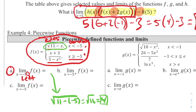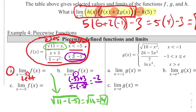Part B: the limit as x approaches −5 from the right. We use the second equation (x ≥ −5). Plugging in −5: (−5 + 3)/(5 − (−5)²) = −2/(5 − 25) = −2/(−20) = 1/10. The right-hand limit equals 1/10.